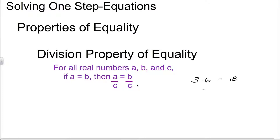Pretty simple. What it means is, if we divide one side by a number, to maintain this equality — or to keep this balance — we have to divide the other side by the same value. Here we have a numerical example: 3 times 6 is equal to 18. We know that as being true, but we can change it a little bit by dividing each side by 3.